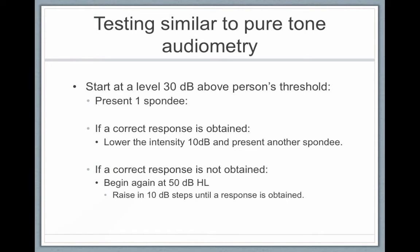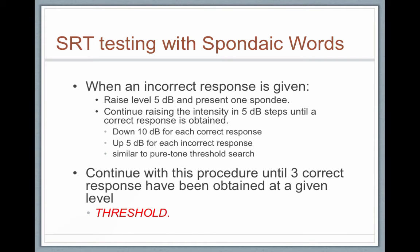You start at a level of 30 decibels, similar to pure tone audiometry threshold testing — threshold being the lowest level a person can hear. With the speech recognition threshold, it's the lowest level at which a person can recognize and repeat speech. If a correct response is obtained, go down 10 decibels and present another word. If incorrect, move up to 50 decibels and begin the threshold search again: down 10 for each correct response, up 5 for each incorrect. Continue until they reach the 50% mark — that is the SRT.